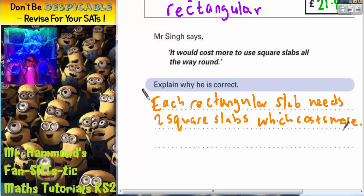We could say that each rectangular slab needs two square slabs, which costs more. And then we would have to prove this.